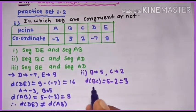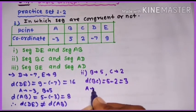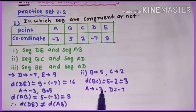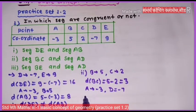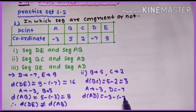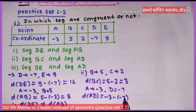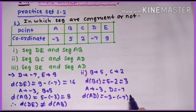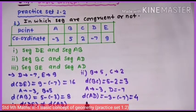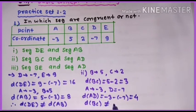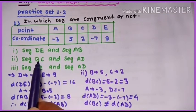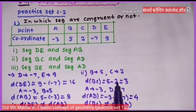Now find distance AD. A चा coordinate minus 3 आणि D चा coordinate minus 7 आहे. minus 3 is greater than minus 7, so distance AD = minus 3 minus (minus 7) = minus 3 plus 7 = 4. Distance BC = 3 आणि distance AD = 4, so segment BC and segment AD are not congruent.